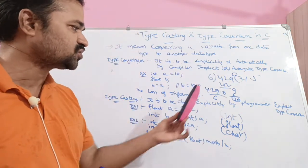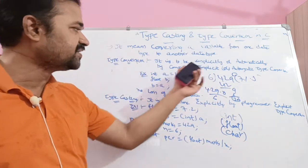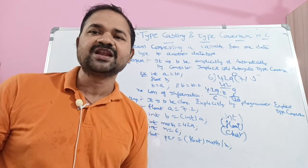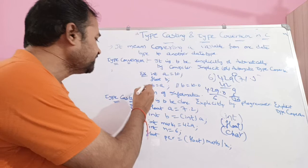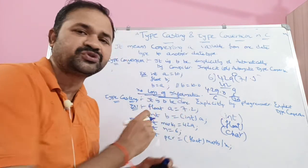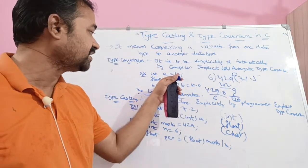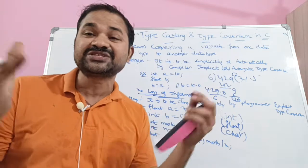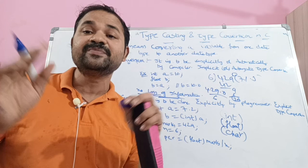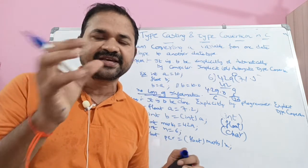So with typecasting, 429.0 divided by 6 gives 71.5. Now, to clarify: type conversion — there is no loss of information. For example, 10 is converted to 10.0, no data is lost. Typecasting — there is a possibility of loss of information. For example, 7.2 cast to int gives 7, so the .2 is lost.